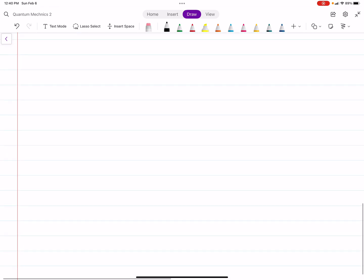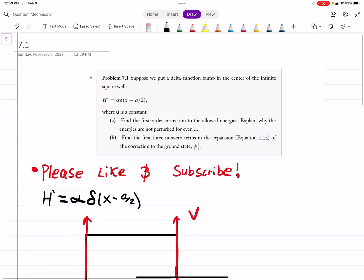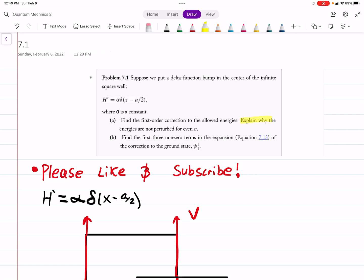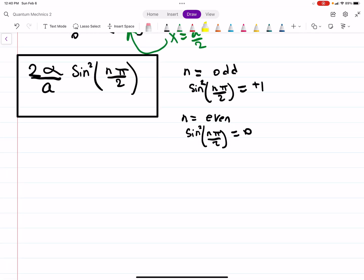So part A, well, number 1, this is our answer. And number 2, it asks to explain why the energies are not perturbed for even n, because they don't change. So every even n will just be 0. You're going to add 0 to your original energy. You're not actually going to be changing anything. You're only changing anything for odd n's.